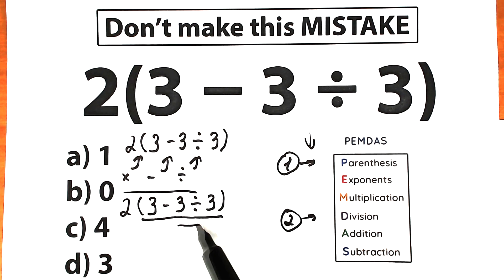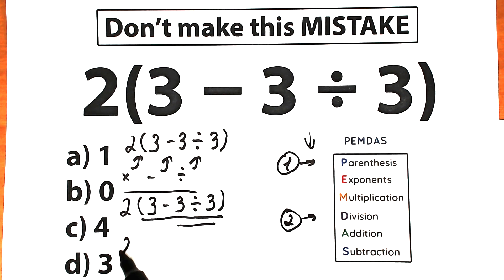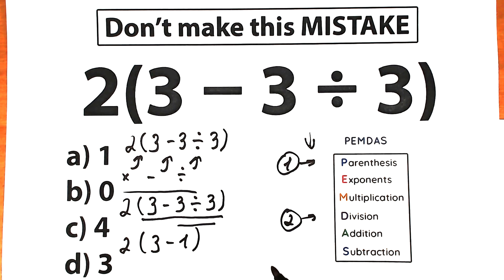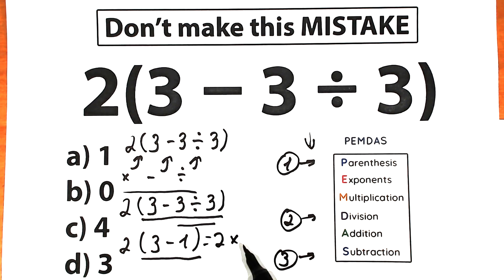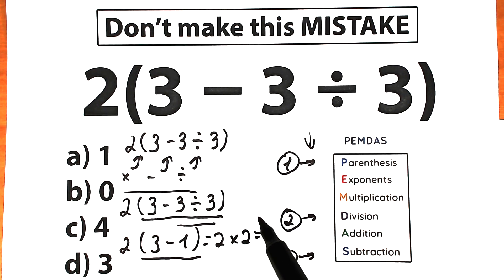We should solve our challenge according to PEMDAS. We have 2, and inside the parentheses we now have 3 minus 1, because we complete the division step. Our third step is subtraction, because the subtraction sign is inside the parentheses — we should evaluate the expression inside the parentheses. So we get 2 times 2, which is option C.